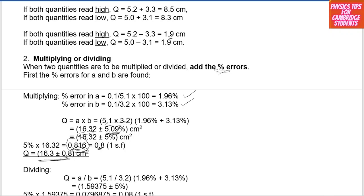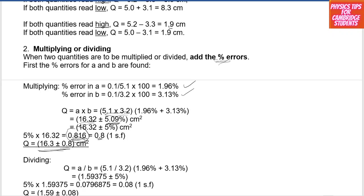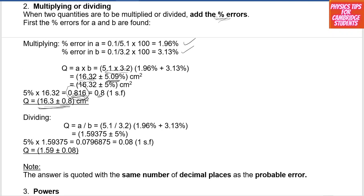Similarly, when dividing quantities A/B, we add the same percentage uncertainties: 5.09% of 5.1/3.2 = 5.09% of 1.59375 = 0.0796, which expressed to 1 significant figure is 0.08. The value of A/B is then adjusted to be consistent with the decimal places on the uncertainty, giving 1.59 ± 0.08.